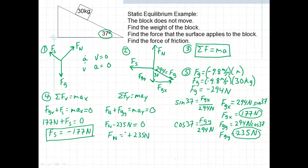Let's double check: is the normal force pointing upward? Yes, it is — so that must be correct, at least the direction. Going back to verify we've answered everything: we found the force of friction (177 newtons up the ramp), we found the force that the surface applies to the block — the normal force (235 newtons), and we found the weight, which is the force due to gravity: negative 294 newtons.